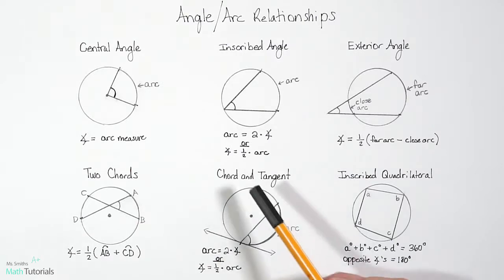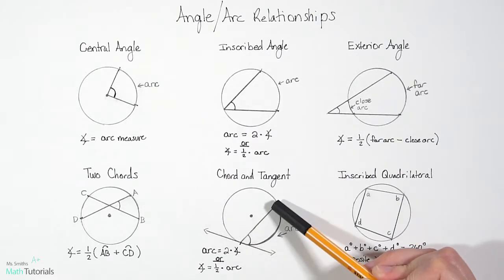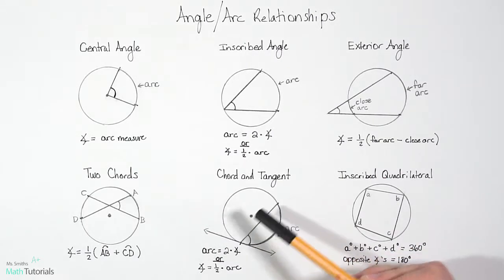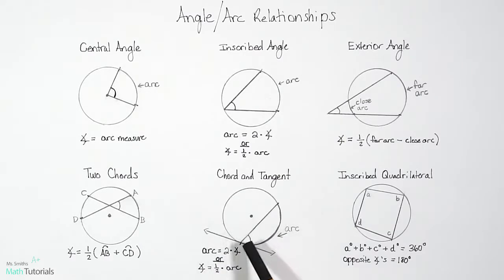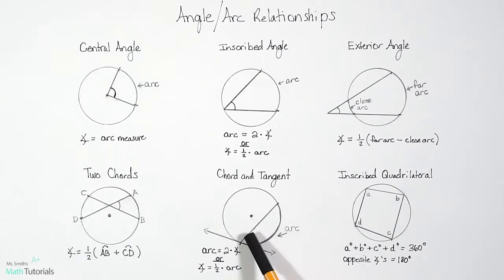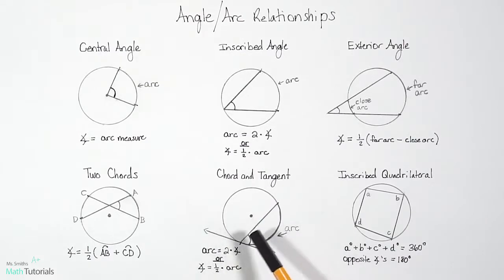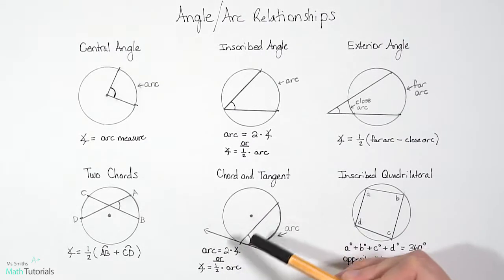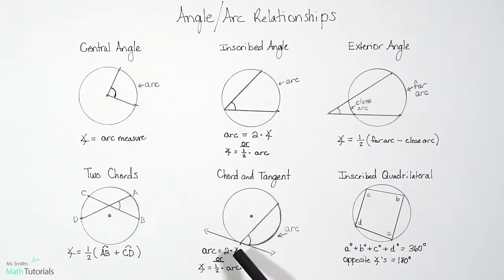Next we'll look at a chord and tangent. We have a chord stretching across the circle but not through the center, and a tangent which just touches the circle and keeps going — it doesn't cross through. We can find the arc measure from here to here by taking the angle measure and multiplying it by 2, or we can find the angle measure by taking one half times the arc measure.